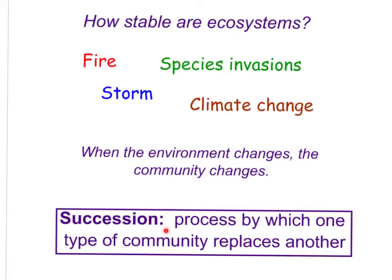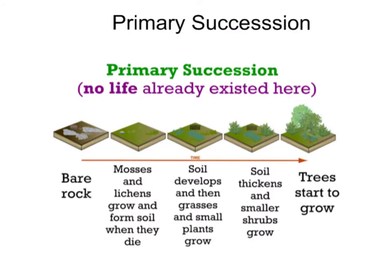Let's look at two different kinds of succession. Primary succession occurs where no life ever existed before. An example would be a bare rock — no life existed there. But moss and lichens begin to grow, begin to form soil when they die. Then the soil develops, we get little grasses and small plants, soil thickens, and smaller shrubs can grow. Eventually trees are able to grow. With primary succession, there's no life existing yet — not even soil or prokaryotic organisms.